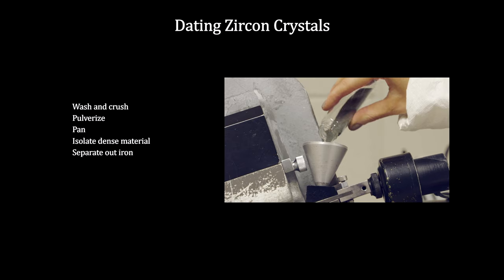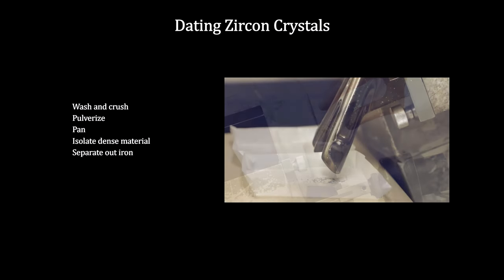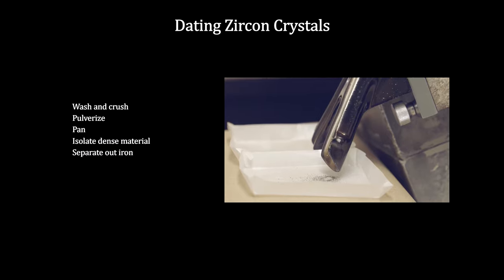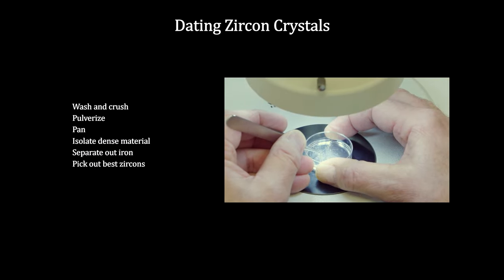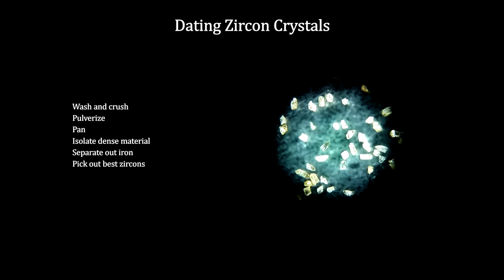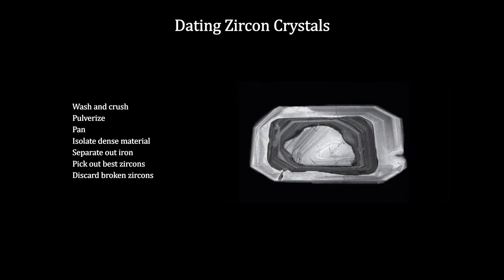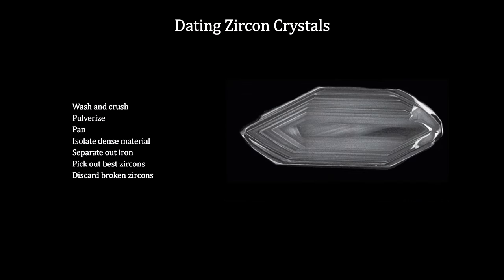They then pass the remaining material through a magnetic field to separate out the grains with the most iron. At this point, they have a few milligrams of zircon with all other minerals removed. Using jeweler's tweezers under a microscope, they manually select the very best 40 or 50 zircon crystals and put these under an electron microscope, which brings out the inner structure of each crystal. Some are damaged and discarded; some are pristine and used.